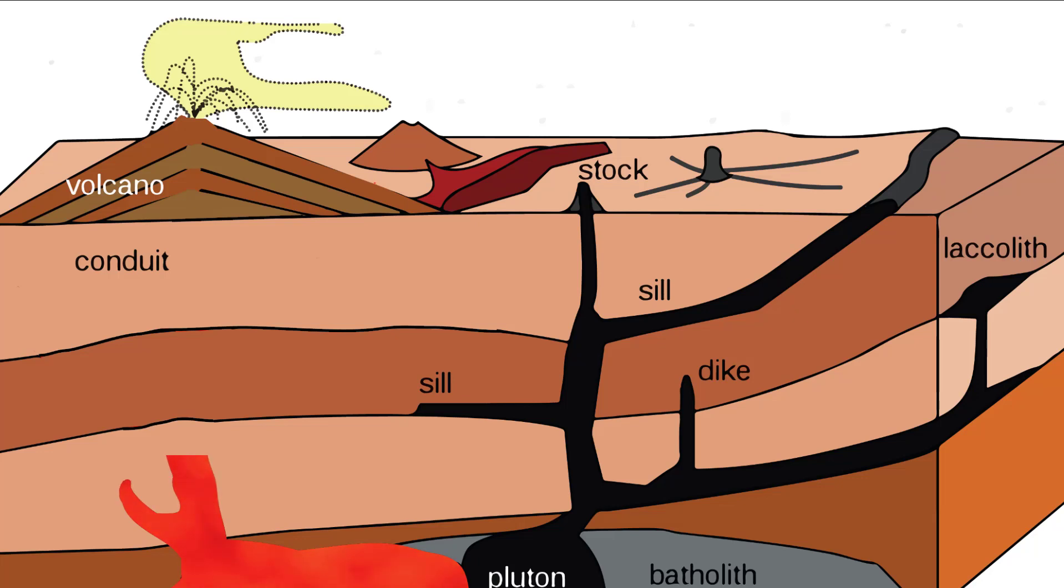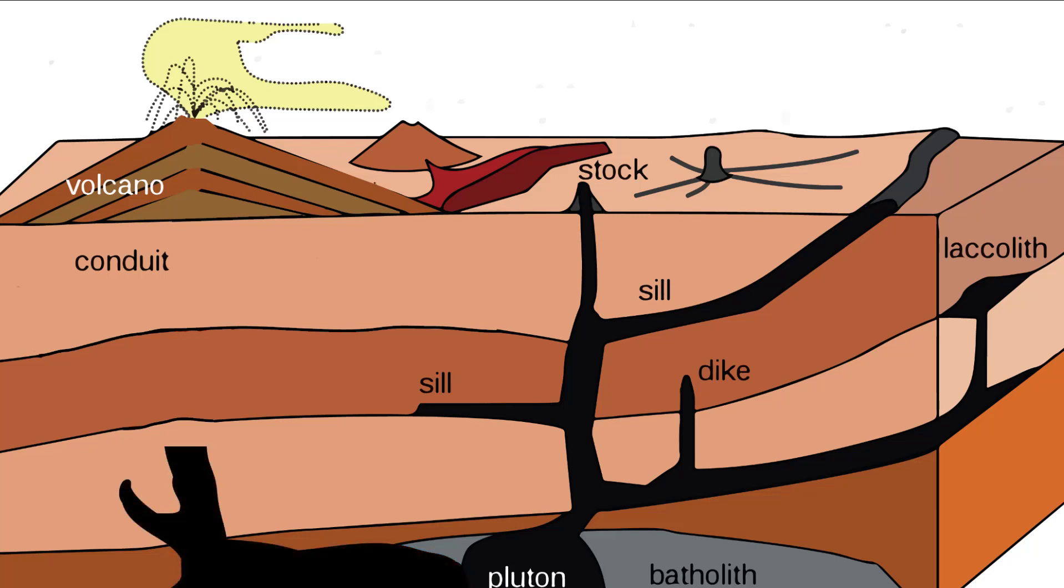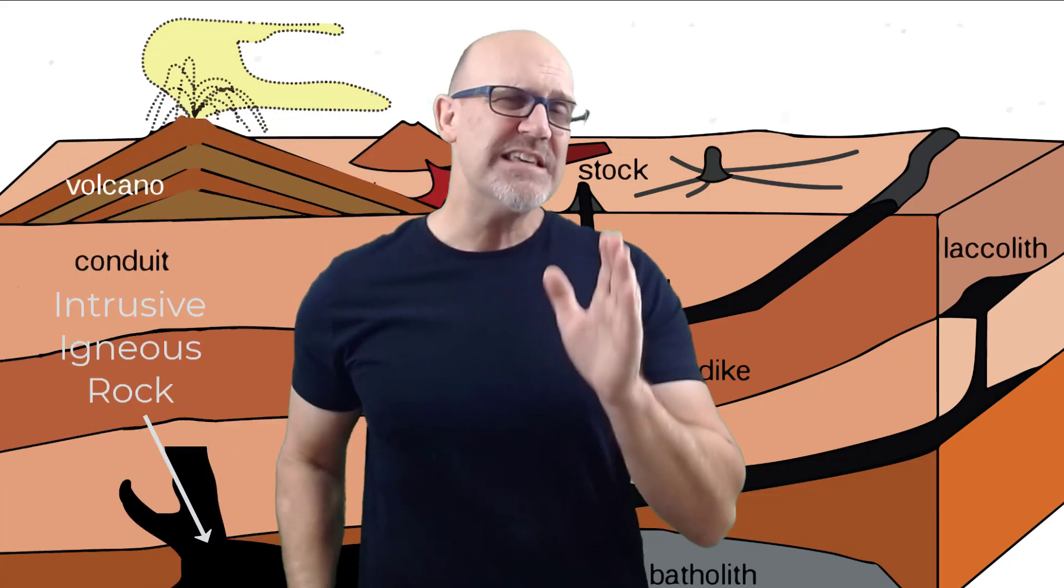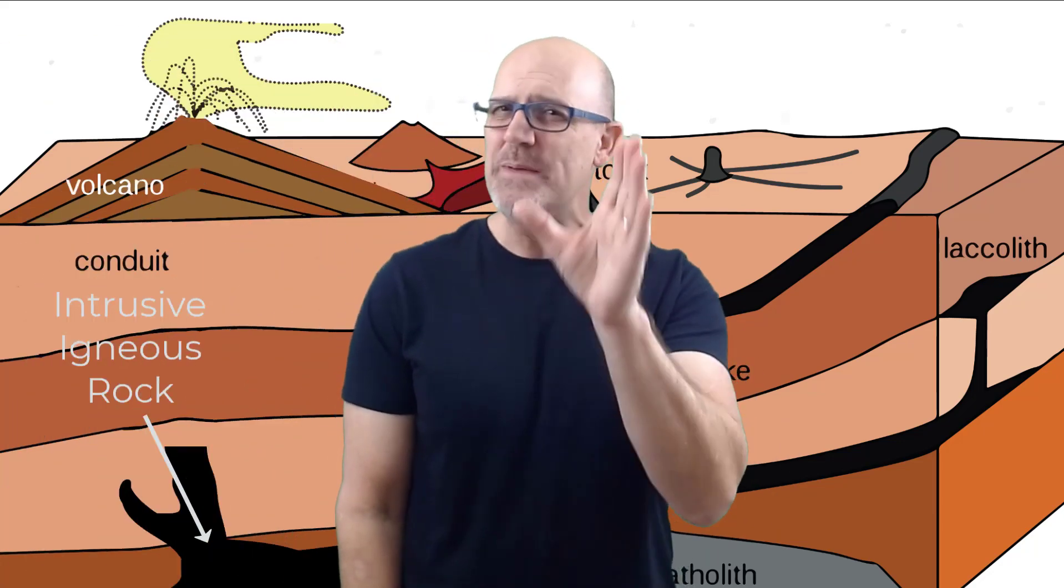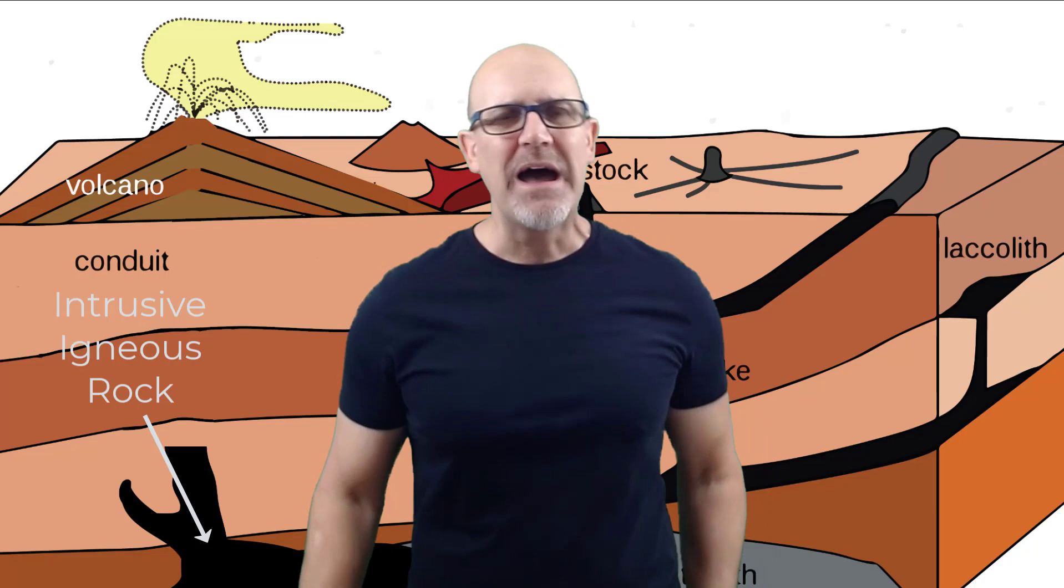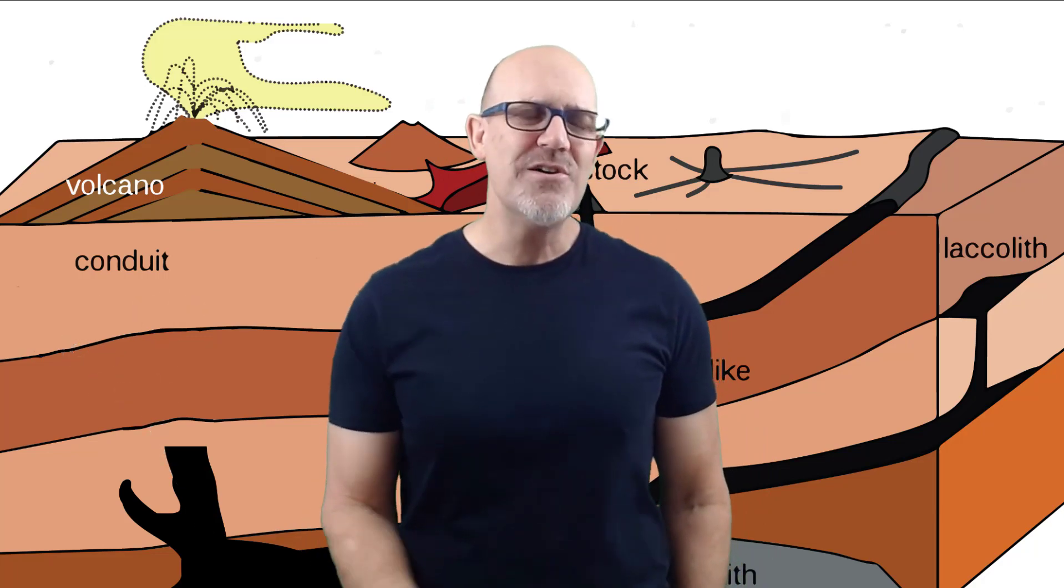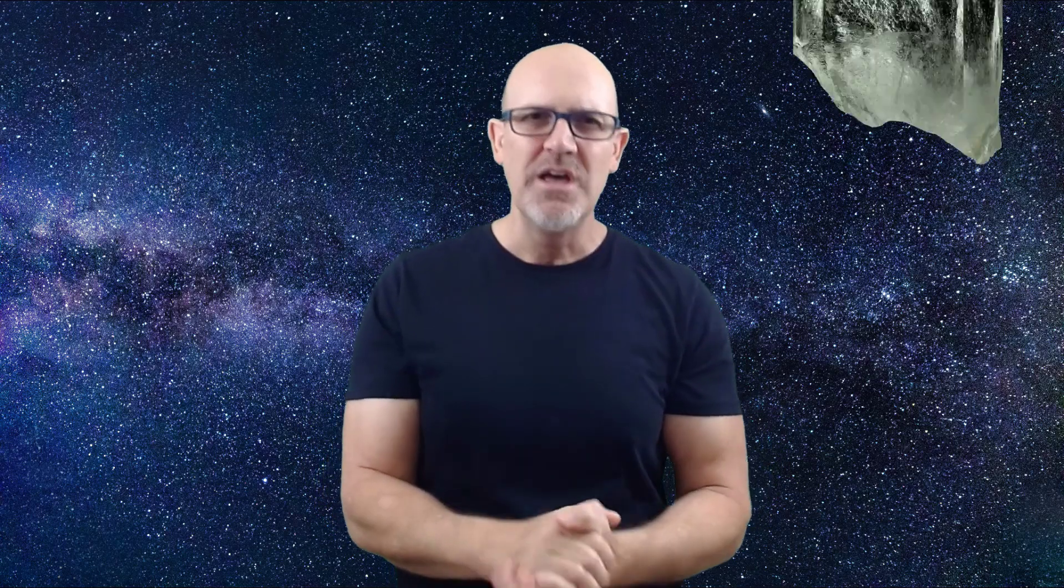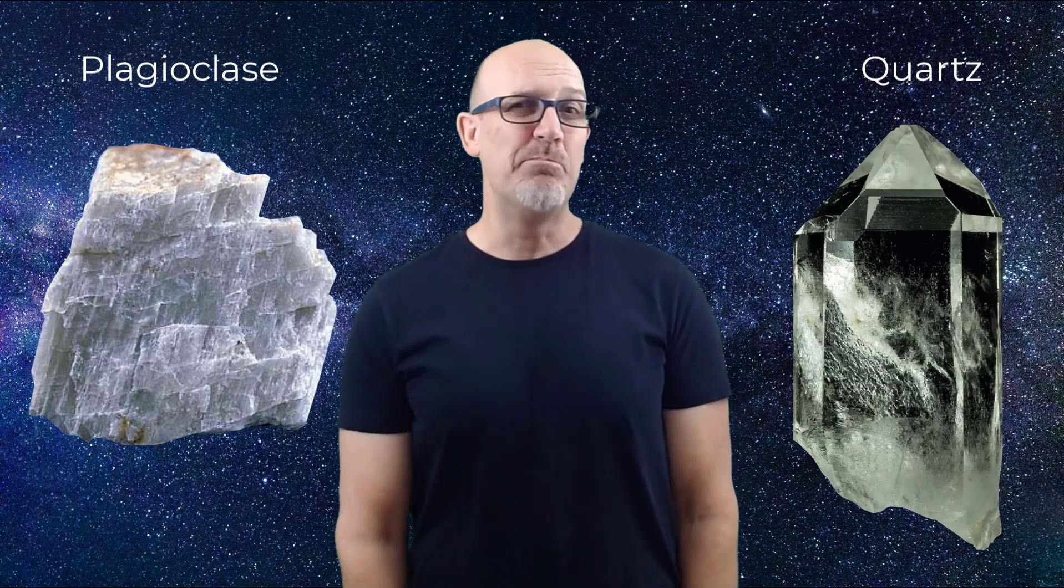If the magma hardens or crystallizes, that's the correct word, inside the earth, then we call it an intrusive igneous rock. And this is easy to remember because of the word 'in' at the beginning of the word. 'In' reminds us of inside the earth. Typically magma hardens really slowly inside the earth. And scientists think that this slow cooling is responsible for causing the growth of really big crystals,